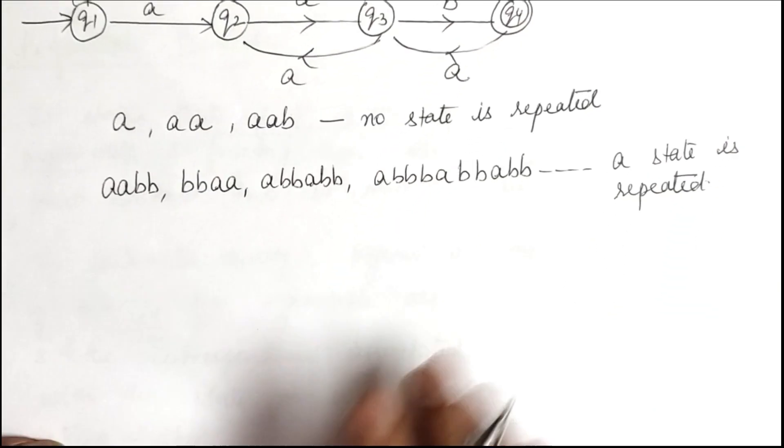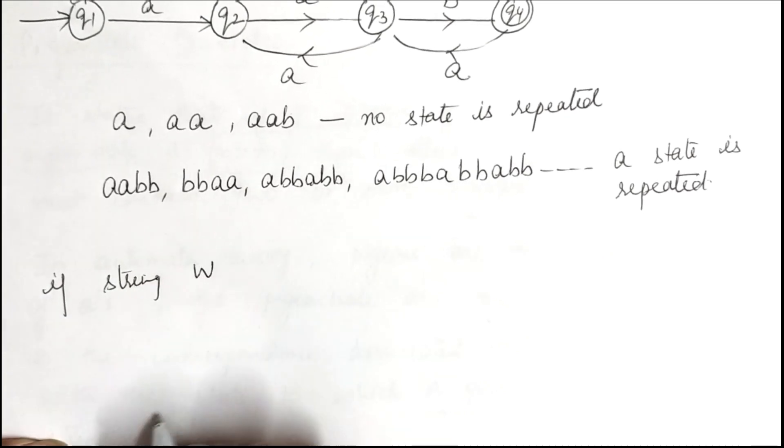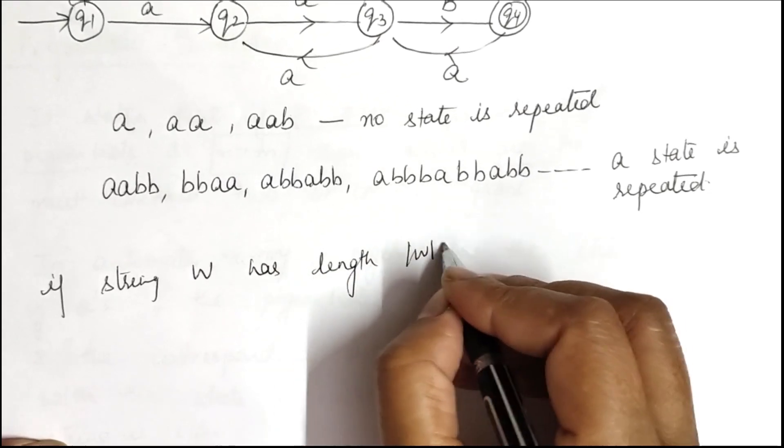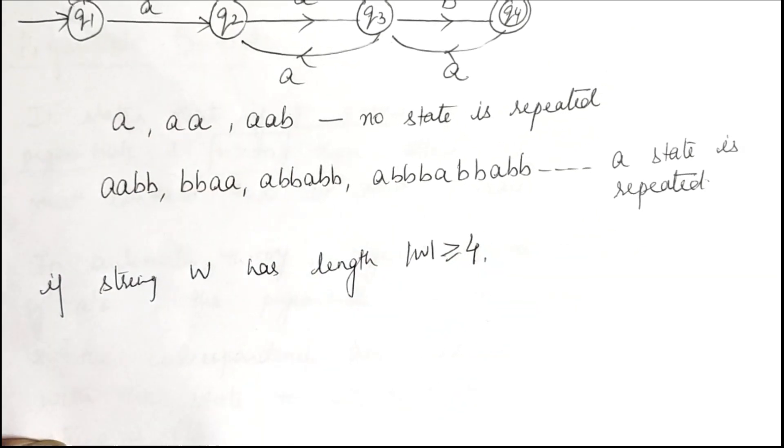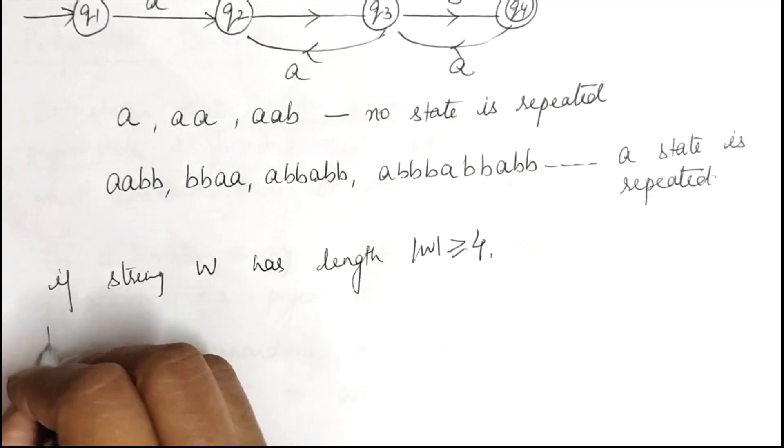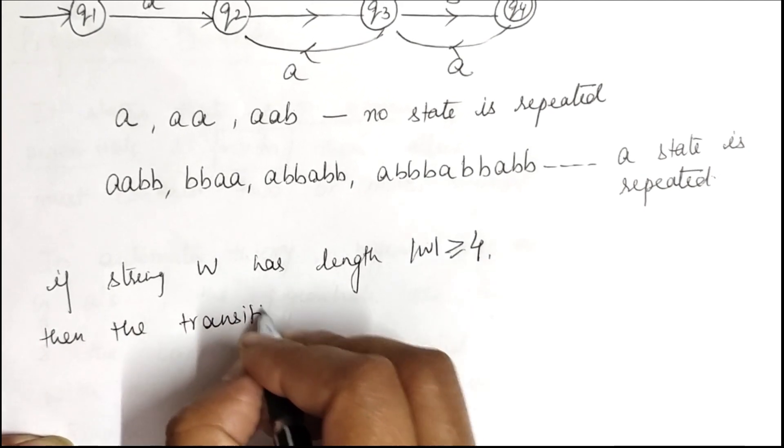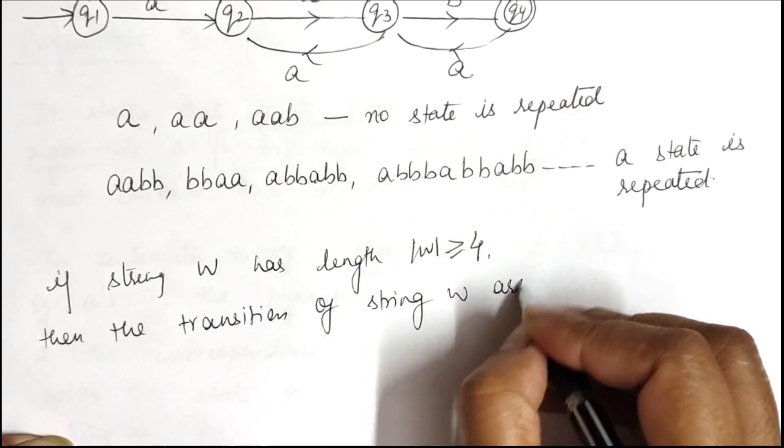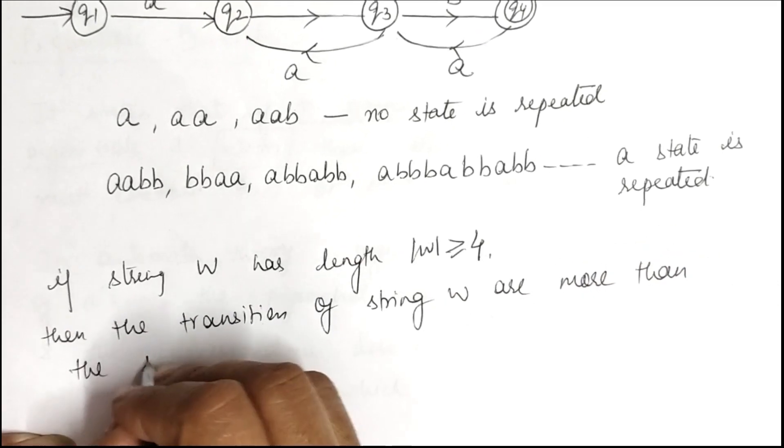This means that if string w has length greater than or equal to 4 for this particular example, then the transitions of string w are more than the states of DFA.